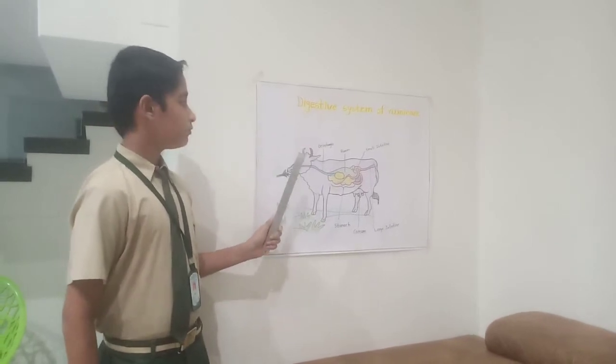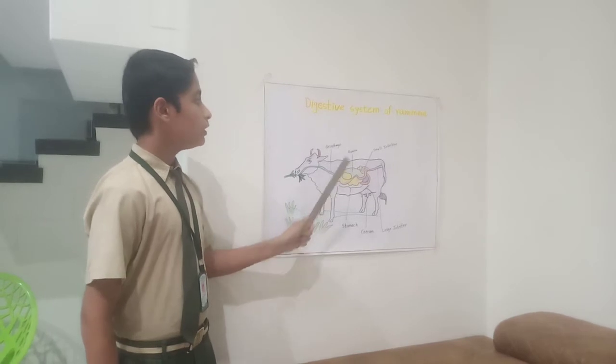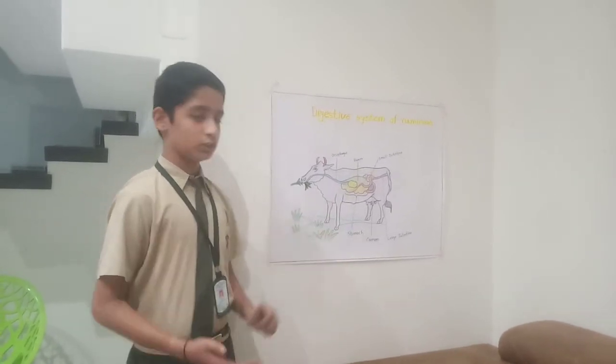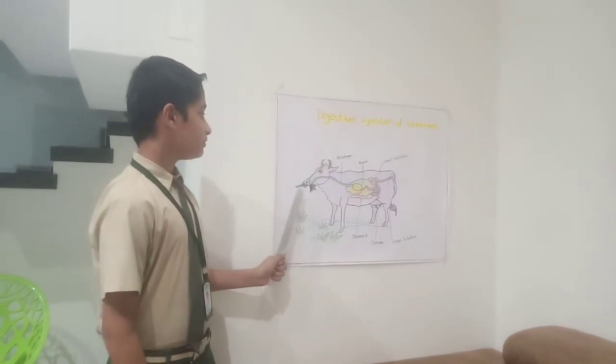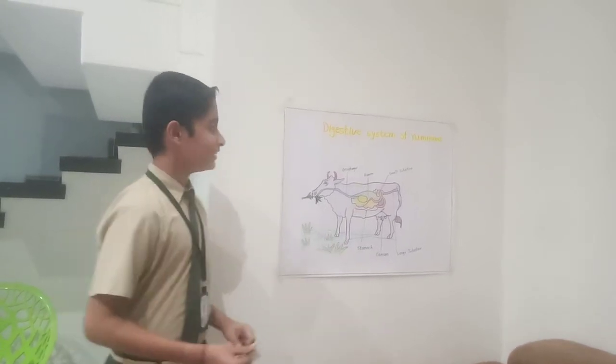Now I will tell you body parts of ruminants. First is esophagus. Second is rumen. Third is stomach. Fourth is caecum. Fifth is small intestine, and sixth is large intestine. Now first is esophagus. The tube through which food goes from their mouth to their stomach is called esophagus.